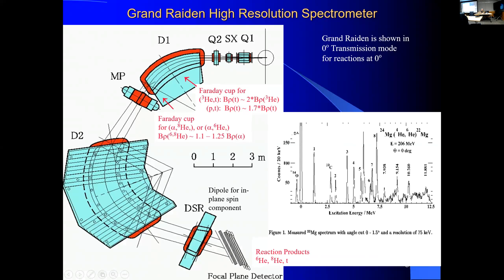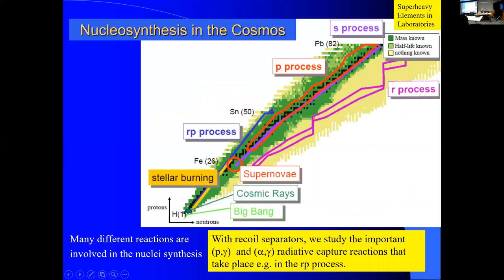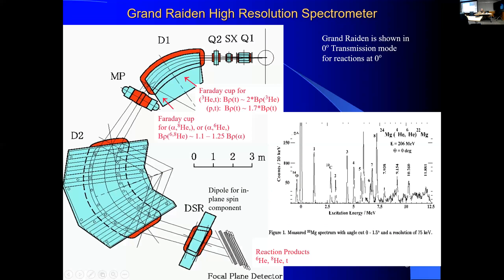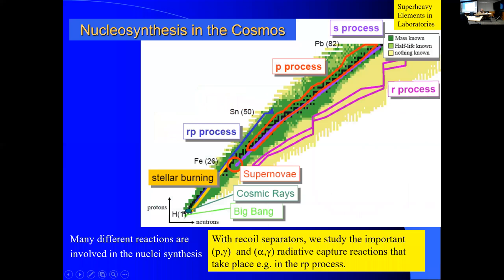At zero degree, for instance, the helium-3, helium-4, helium-6 reaction is shown here at zero degree. Very nice spectrum, very clean, the background, very small.